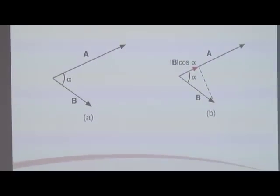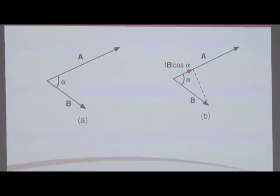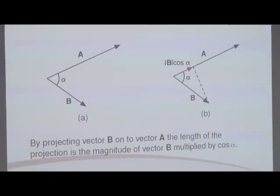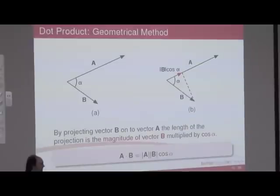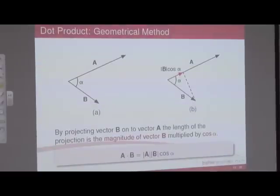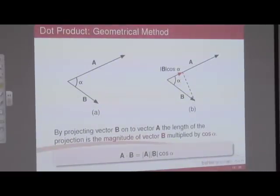For the geometrical method: here are two vectors A and B with an angle alpha between them. To find the dot product, you essentially project vector B onto A. From SOHCAHTOA we know that projection is the magnitude of B times the cosine of alpha, and then you multiply those two values together. So A dot B also equals the magnitude of A times the magnitude of B times cosine alpha. I'm not going to go through the derivation — you'll cover that in maths.